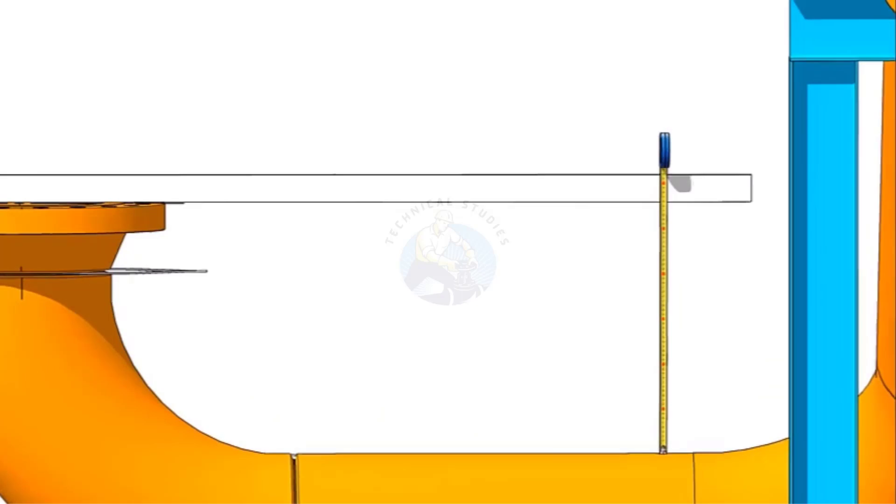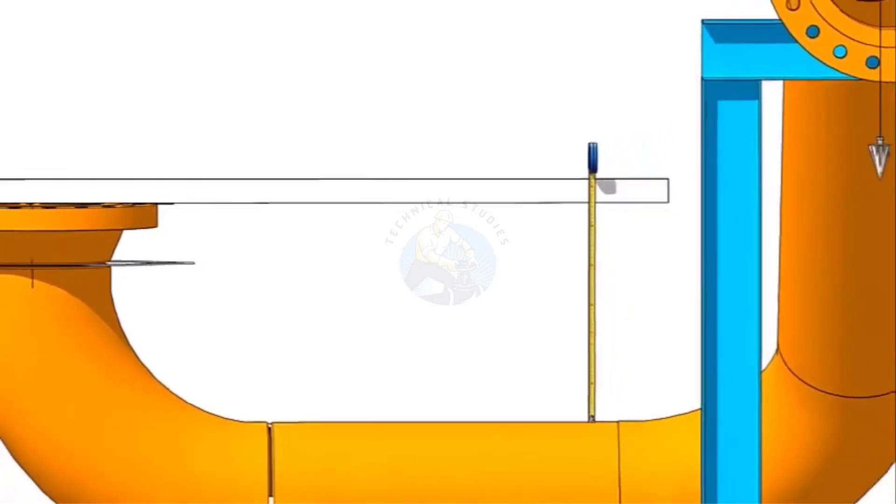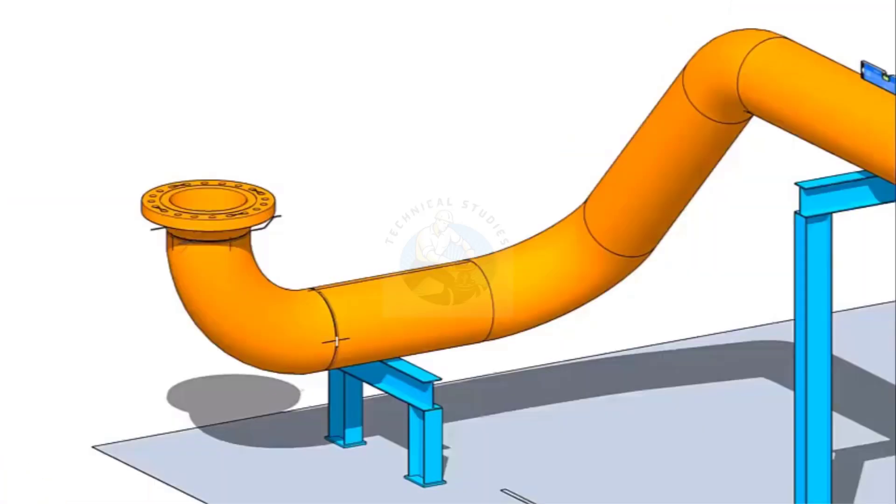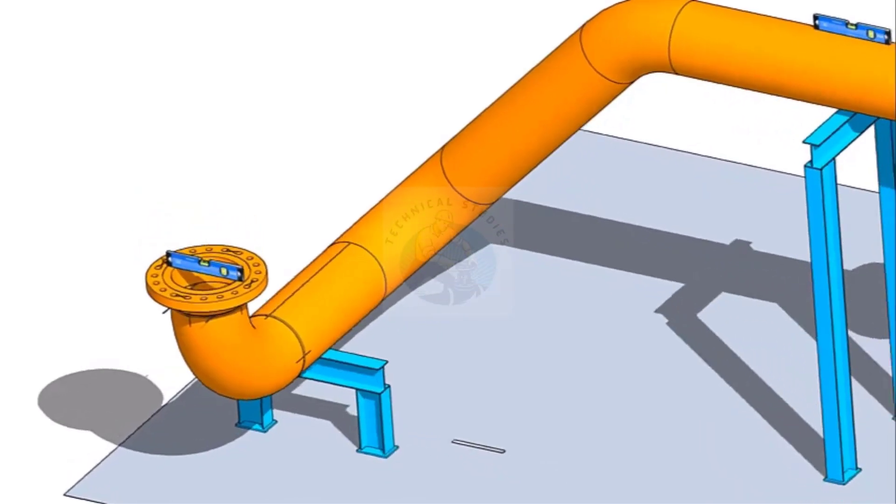If the measurements are equal, that means the face of the flange and the axis of the pipe are parallel. Tolerance may apply as per the procedure. Please watch my previous videos for piping fabrication tolerance.